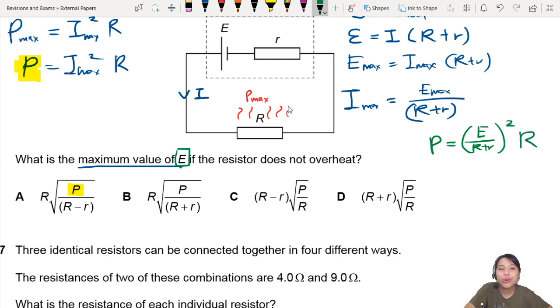So we have to rearrange to solve for E. E equals to something. So let's do some rearranging. P over R equals to E over R plus r. Move the square to the other side. And then one more step. Multiply both sides by the bracket R plus r. So I will get R plus r times square root of P over R equals to E.